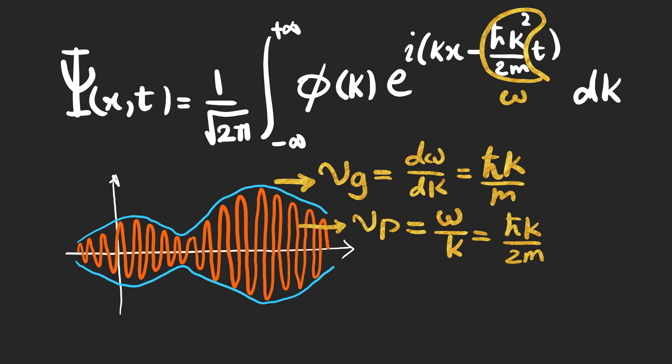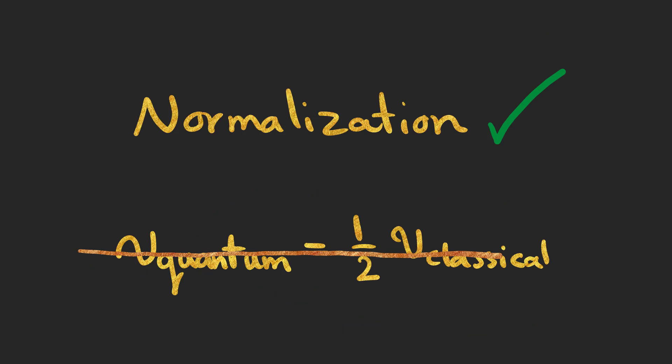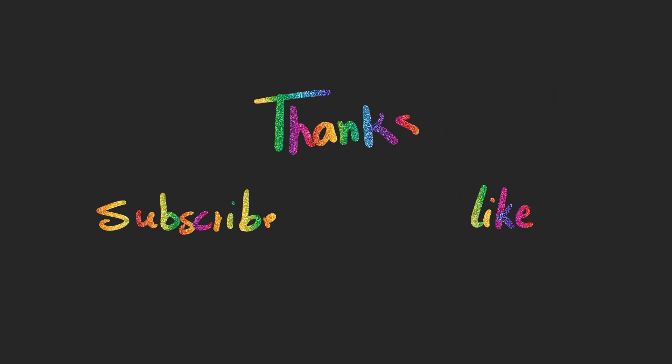So, the speed of the particle is equal to the group velocity, and we have handled this paradox too. Thanks for watching and don't forget to like and subscribe.